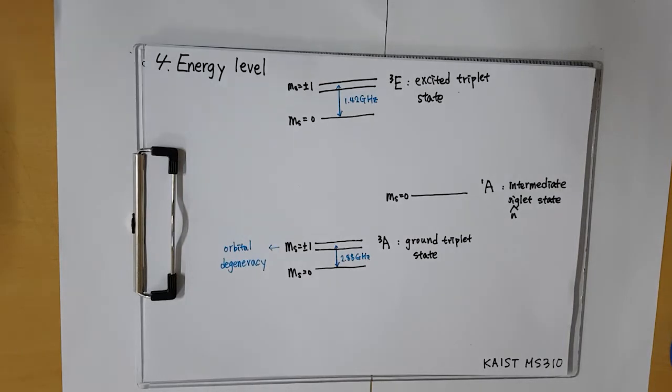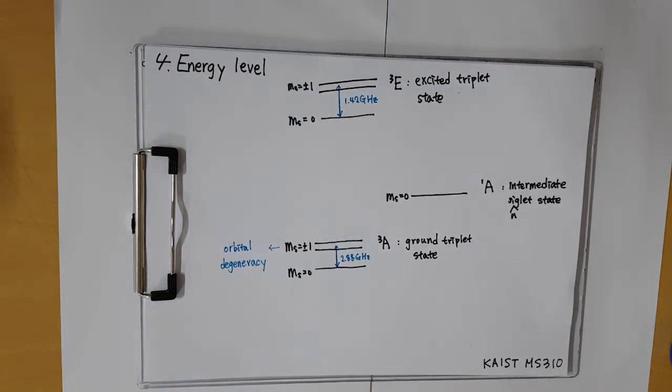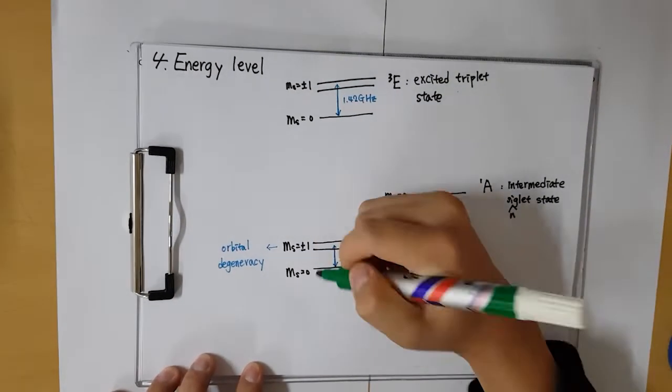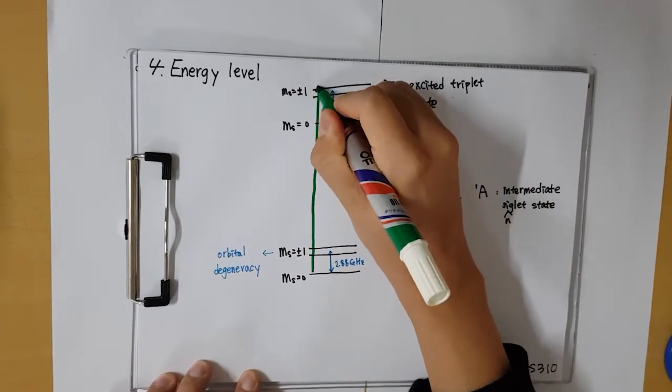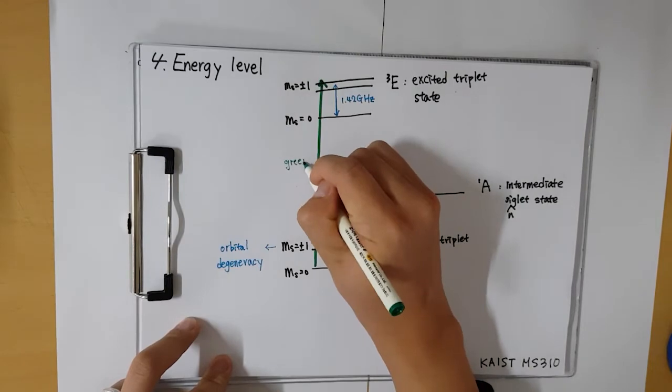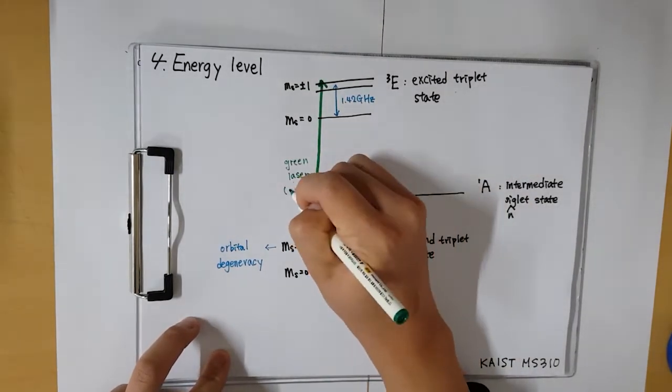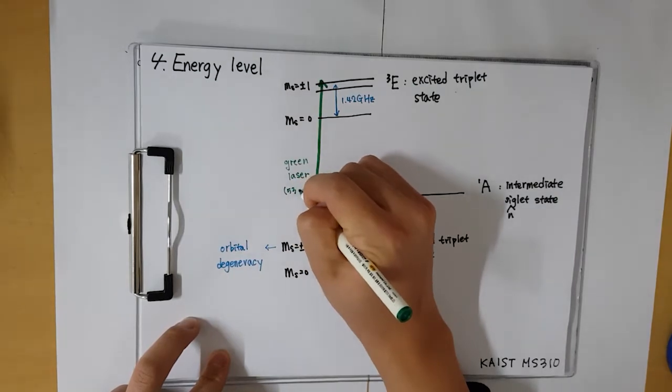So, with those concepts, let's revisit NV Center graph and think about various transitions. If we radiate green laser with 532 nm, all of the electrons in NV Center will be excited, because no transition in NV Center requires or emits less energy than the green laser's energy.